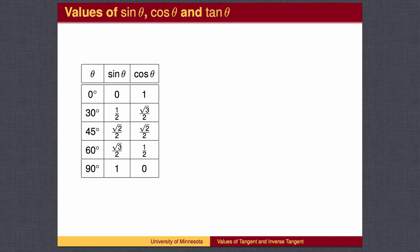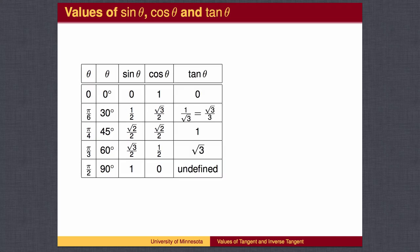We have found values for sine and cosine for some special angles. Here is a table of values in the first quadrant with the angles measured in degrees. We can also measure the angles in radians. We can find the value of tangent for these angles by using the definition: tangent equals sine divided by cosine.